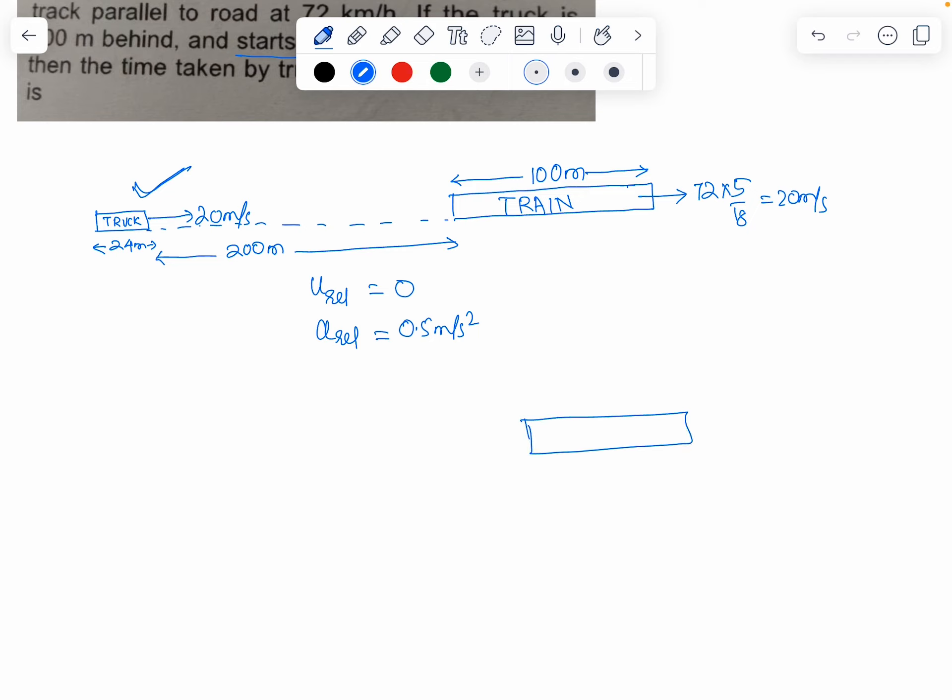The truck will reach here, meaning it travels 200 meters to reach the back of the train, then crosses the entire train.